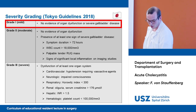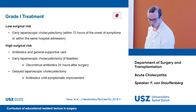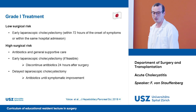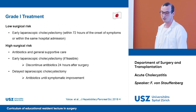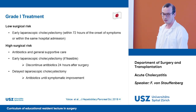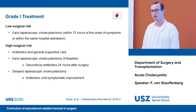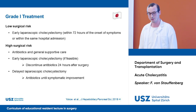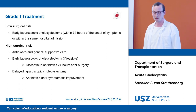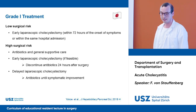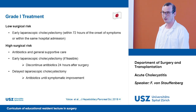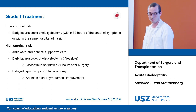In Grade 1 with low surgical risk, we should perform early laparoscopic cholecystectomy within 72 hours of symptom onset. In patients with high surgical risk, administer antibiotics preoperatively and do early laparoscopic cholecystectomy if feasible, discontinuing antibiotics 24 hours after surgery. In patients with too high risk for early surgery, perform delayed laparoscopic cholecystectomy and provide initial antibiotics until symptomatic improvement.